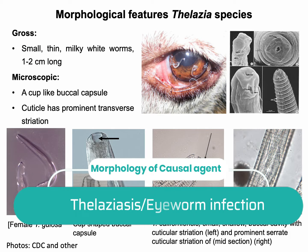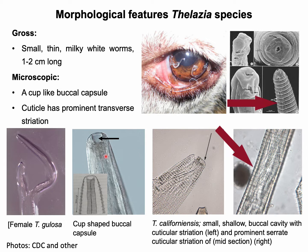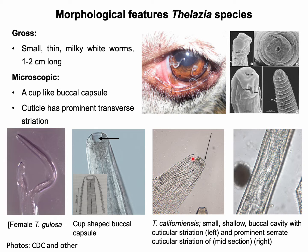Grossly, the parasite is small and milky white in color, with a size of around one to two centimeters. Microscopic features include a cup-shaped buccal capsule, and the cuticle has prominent transverse striations, as you can see in these pictures. This cuticular striation is very important for initiating inflammation in the eyes, which we will discuss in the pathogenesis section.